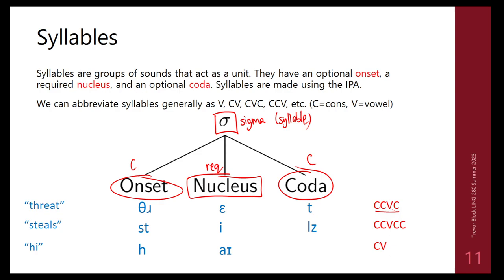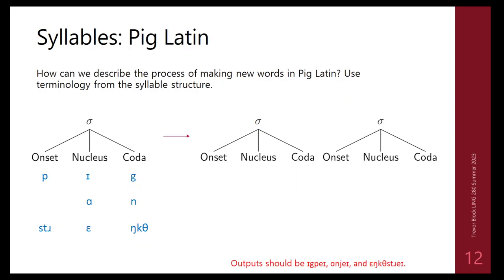'Steels' is C C V C C, and 'high' is just C V. These abbreviations let us describe syllables compactly. Phonotactics directly determines what can appear in onsets and codas, so phonotactics and syllable structure are tightly linked.